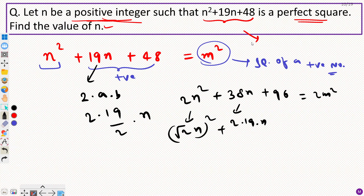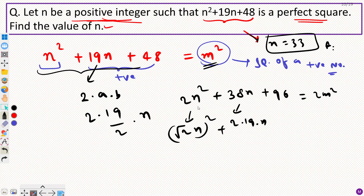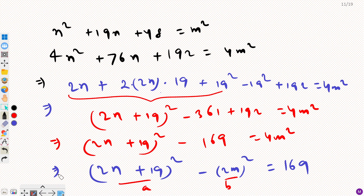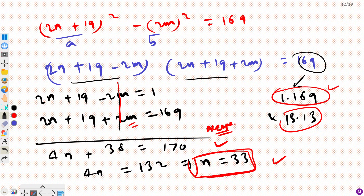So the only valid value is n equals 33. To summarize: we introduced a parameter m assuming the expression equals m squared, then multiplied by 4 to complete the square, getting (2n+19)² minus (2m)² equals 169. Factoring as a difference of squares gave two cases — n equals 33 (accepted) and n equals minus 3 (rejected as negative). So our final answer is n equals 33.